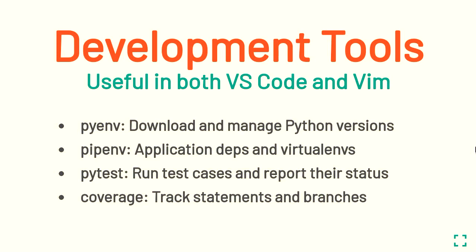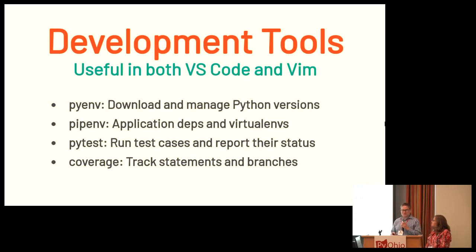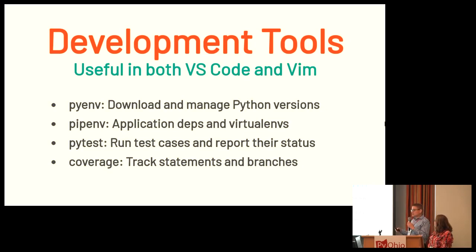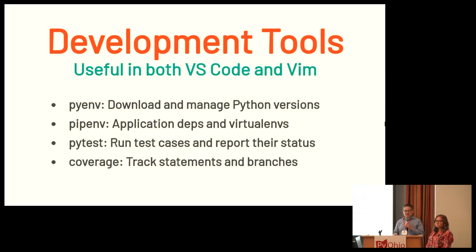Today we are going to stress the use of several key tools — and as a critical caveat, they have almost the same name but do not do the same thing. The first is PyEnv, a tool that allows you to download and install different versions of Python, such as Python 3.6.8 or Python 3.7.3, and switch between them. The second is pipenv, responsible for managing application dependencies and virtual environments. We'll also talk about PyTest, which helps you run test cases and report their status, and we'll show you how to run coverage tracking tools in both VS Code and Vim.